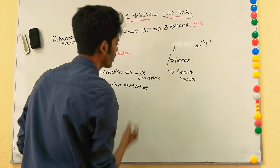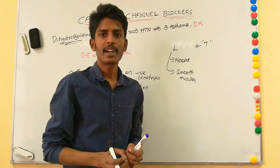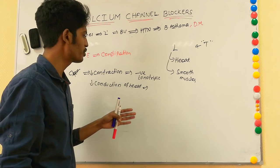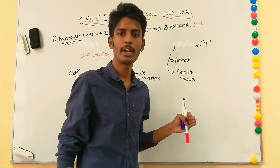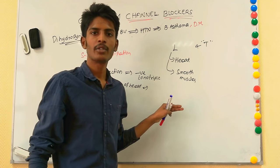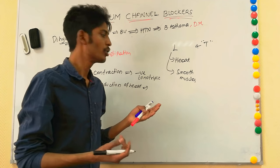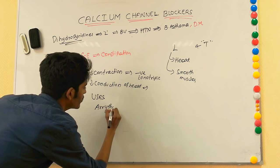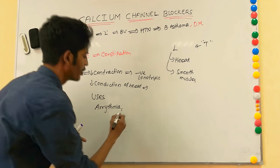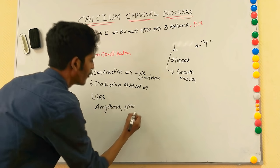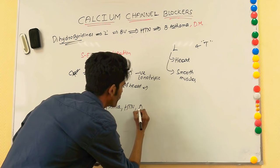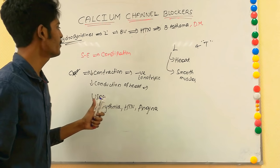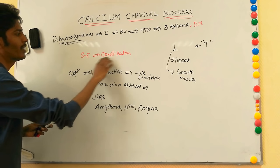Because they decrease cardiac conduction, these drugs cannot be used in AV blocks. Because they decrease contractility, they should not be used in patients with congestive heart failure. However, they can be used in arrhythmias and in hypertension. They can also be used in angina because they decrease the stress on the myocardium.